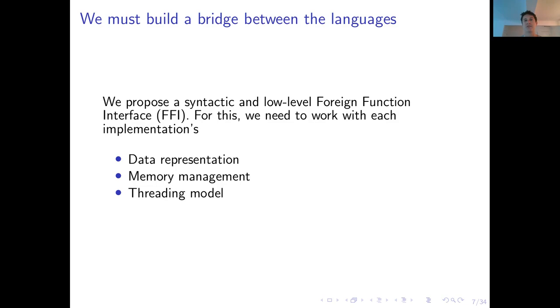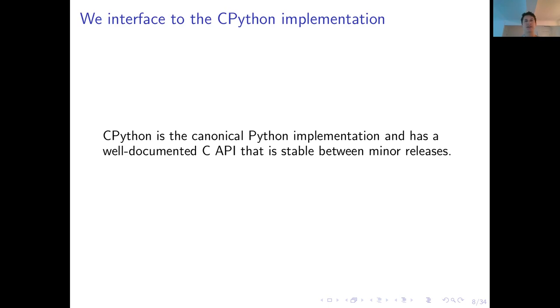Now, to do this, we must do one thing, and it's to build the bridge between the languages. And for us, this bridge has mainly two aspects. It has a syntactic and a low-level aspect. For the syntactic aspect and the low-level interface to work, we must know about each implementation's data representation, memory management, and threading model. Now, we are using the Gambit Scheme implementation, but for Python, we're going to use the CPython implementation in this work. CPython is the canonical Python implementation and has a well-documented C API that is stable between minor releases, which is a great advantage to us, as we don't have to always fix things.